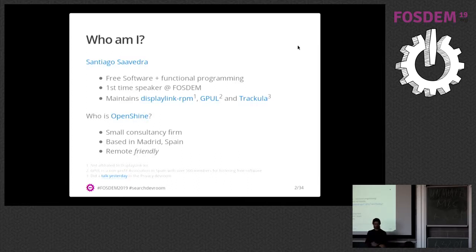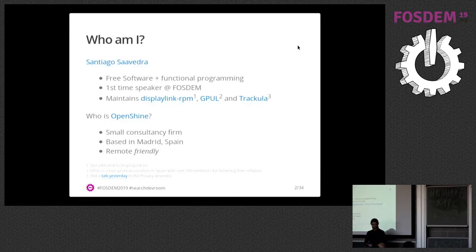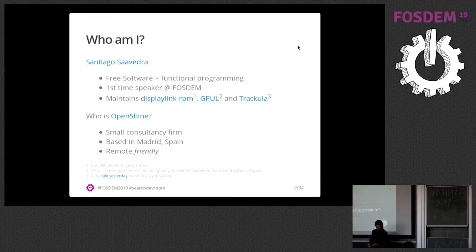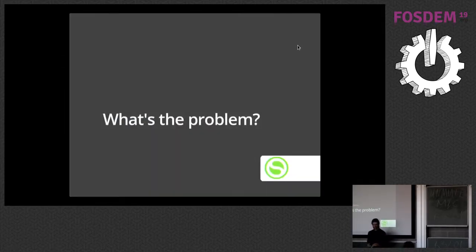I'm a free software and functional programming enthusiast, and I'm maintainer of some projects on GitHub and also in the real world. Gepul is a non-profit we have in Spain in the northwest where we do fostering of free software. Dracula is a project for keeping privacy and educating about it. I'm working for OpenShine, which is who sponsored this work — we're a small consultancy firm based out of Madrid, and we have some remote opportunities available at some points, so I encourage you to check it out.